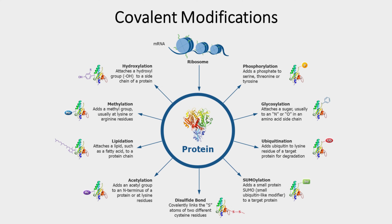Proteins can also undergo the process of covalent modifications. These modifications include phosphorylation, acetylation, disulfide cross-linking, carboxylation, methylation, and hydroxylation.